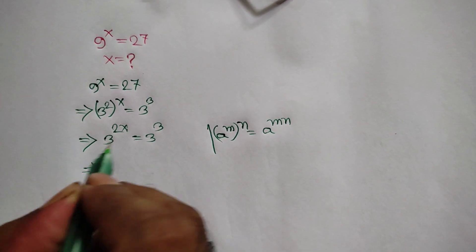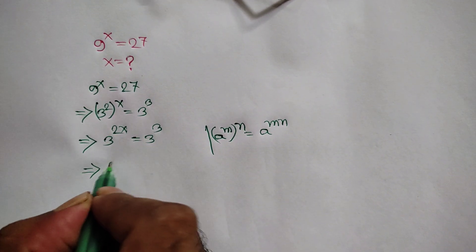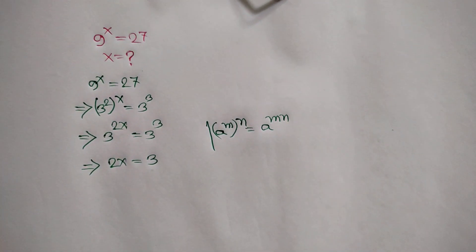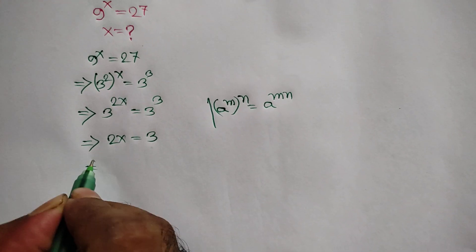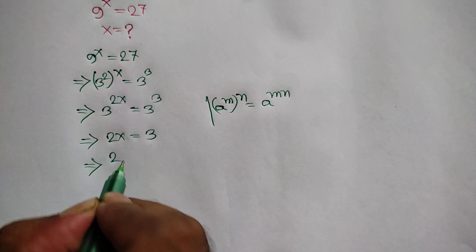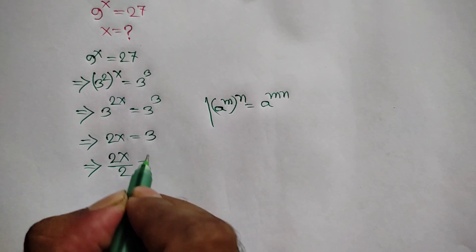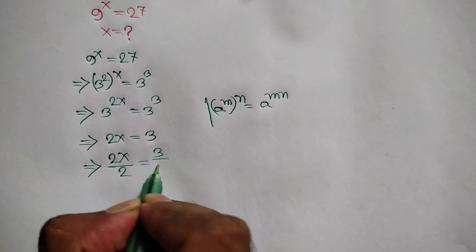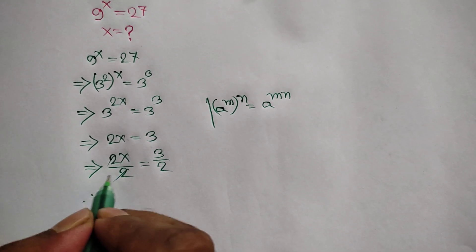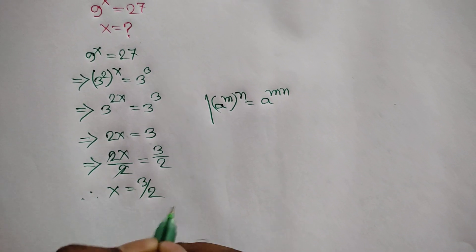Here there are same base but different powers, so we can write power is equal to power. We need the value of x, so we divide both sides by 2. This 2 cancels out this 2, so the value of x is equal to 3 over 2.